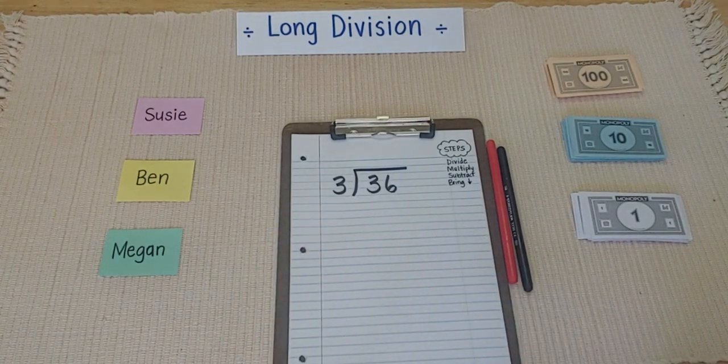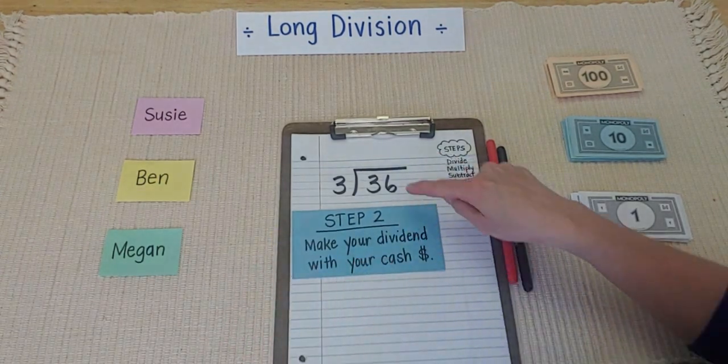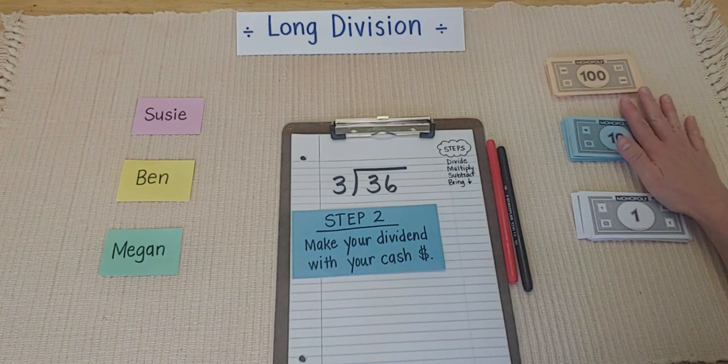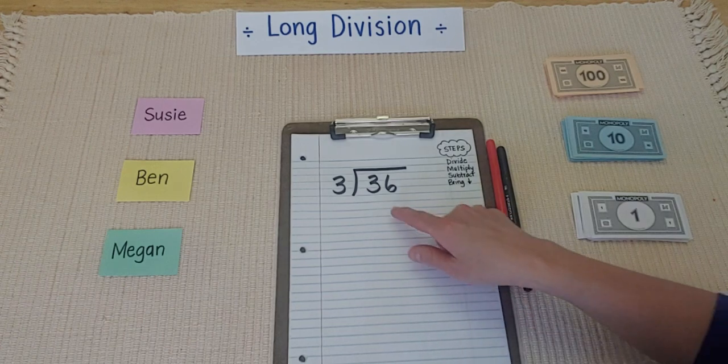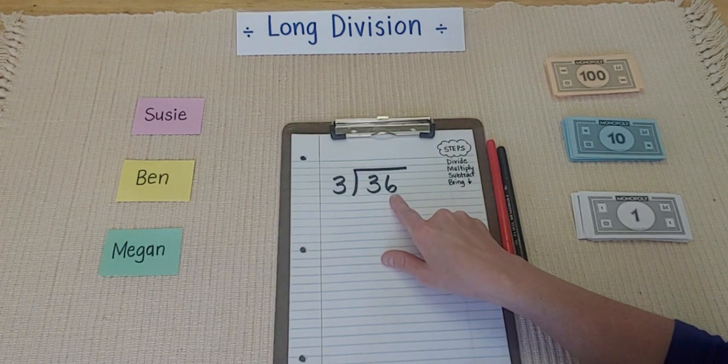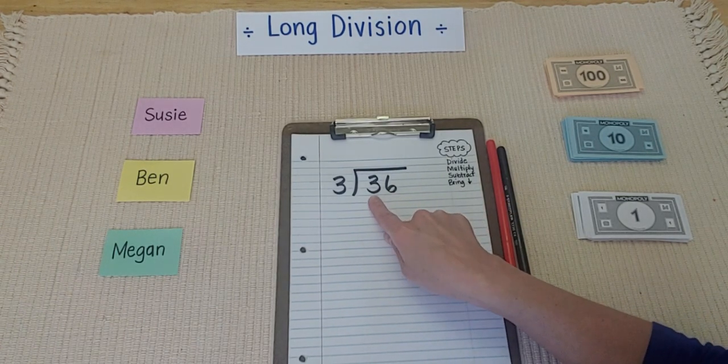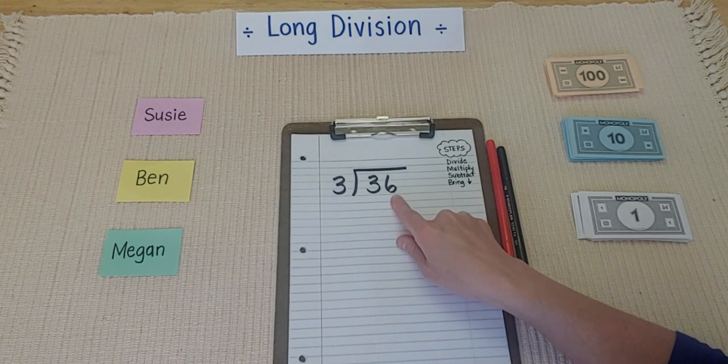Step number 2. Make your dividend with the cash. So, let me show you how to do that. When you look at this dividend, $36, that really means I have 3 tens and 6 ones.